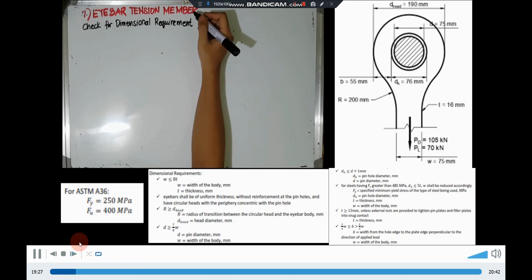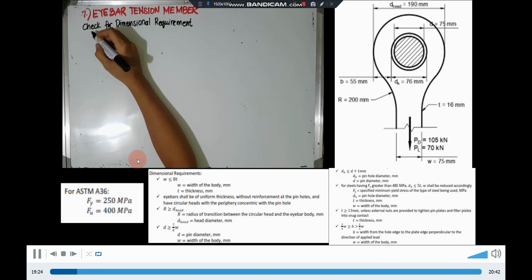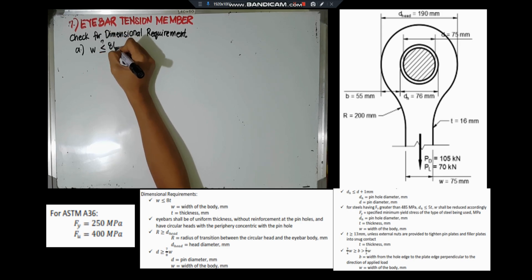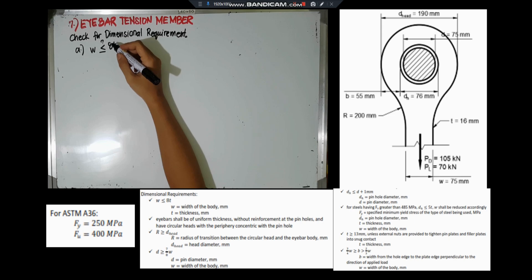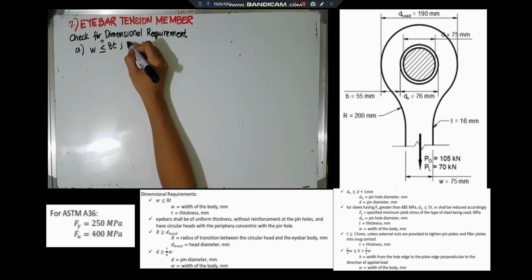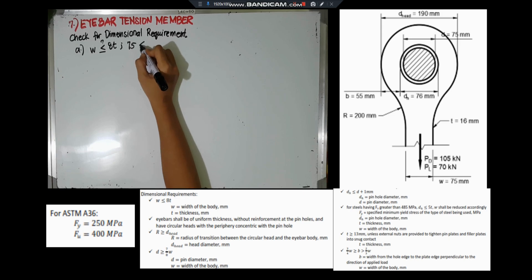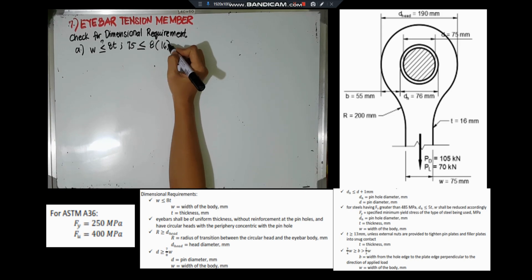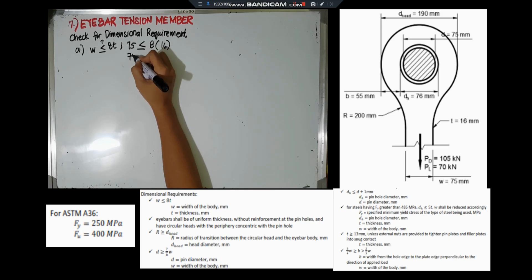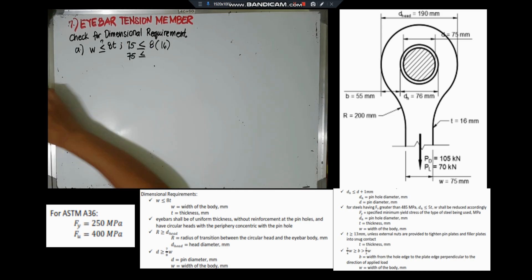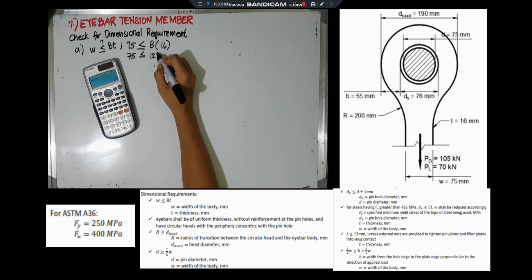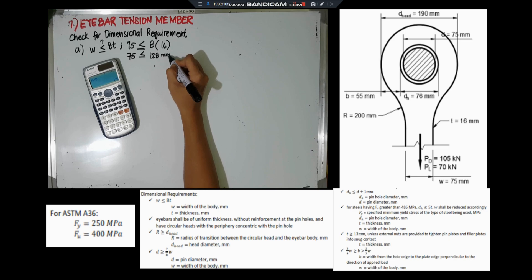First, we'll try to check for the dimensional requirements. The first requirement: the width of the body must be less than or equal to 8 times the thickness. Our thickness is equal to 16mm, and the width of the body is 75mm. Multiplying: 8 × 16 = 128mm.